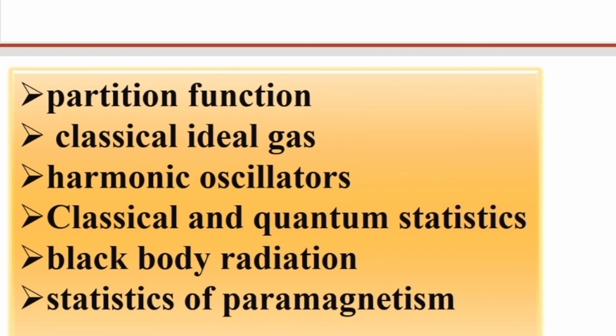Then you will have questions of statistics of paramagnetism - these questions will also be there. Classical and quantum statistics comparison type questions will be there. So these sorts of questions you will be getting related to these topics. These are as a whole for all the three competitive exams. This analysis was not only for CSIR NET but all the three.